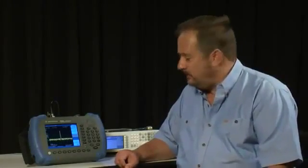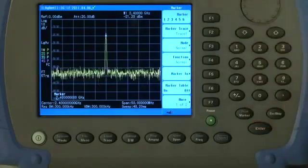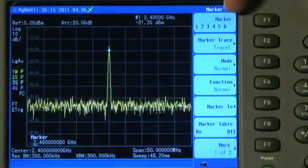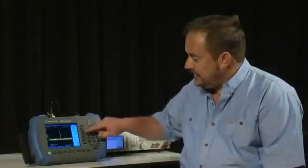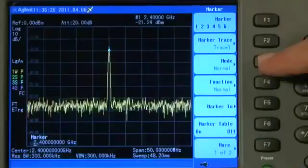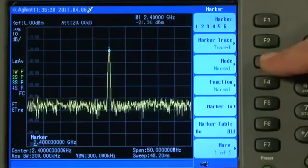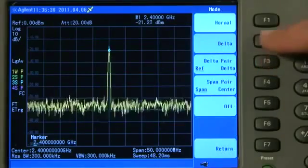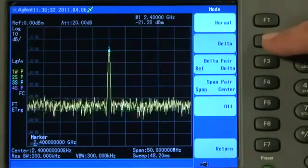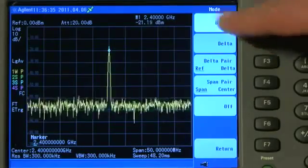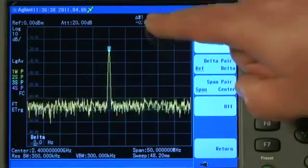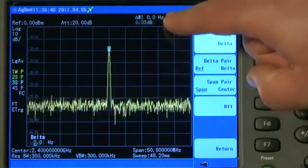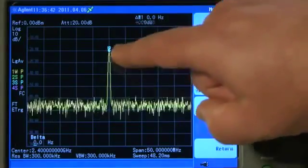There are a couple of other useful marker features we ought to take a look at while we're doing this. If I press the Marker button again, you will see first of all we have up to 6 markers that we can have turned on at the same time. Currently the Marker Mode is set to Normal for Marker 1. If I press the Mode button, you will see we can have a Delta Marker. This can be quite useful. If I press Delta, instead of the marker saying 2.4GHz, it now says that Marker 1, or the Delta Marker 1, is now 0Hz and 0dB.